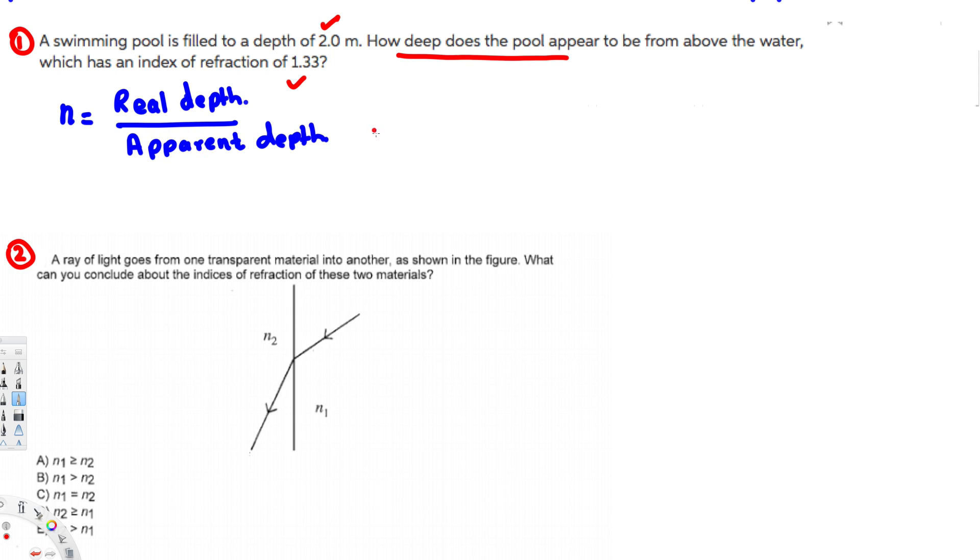Let's call apparent depth AD, so AD is equivalent to real depth RD over n. Real depth we know is 2 meters, so 2 over index of refraction, that is 1.33.